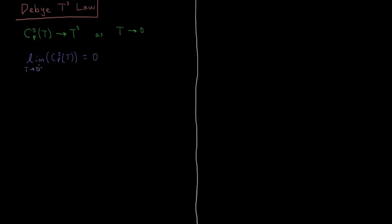So if the heat capacity is zero, this means that any infinitesimally small amount of heat added into the system will increase the temperature, and the temperature will no longer be at zero. This is one reason why it's so difficult to get very close to absolute zero — as you approach it, the heat capacities of substances get very low, and it becomes very hard to avoid absorbing some microscopic amount of heat that pushes them above absolute zero.